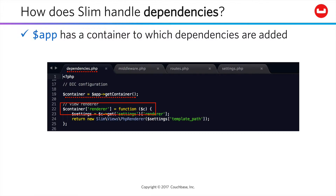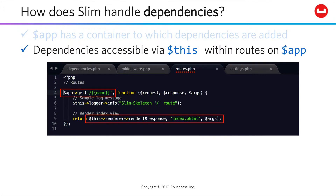So for example in your dependencies file, you can get a reference to the container and then assign to that container one or more functions. So if we assigned a function titled renderer, as you see here, that renderer function is going to be available in your route code, as you see here. We could have a GET HTTP verb route that is receiving a parameter called name.